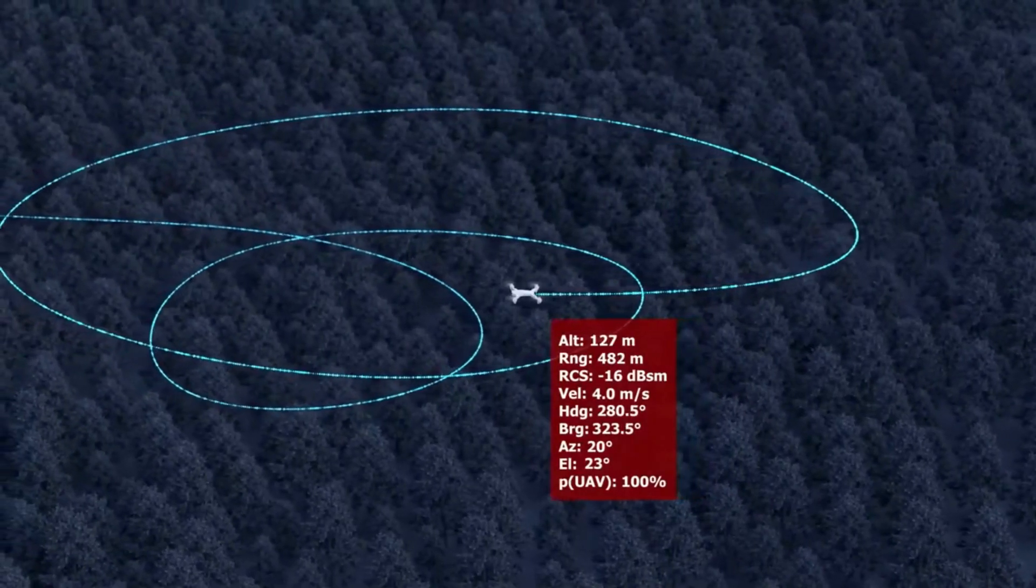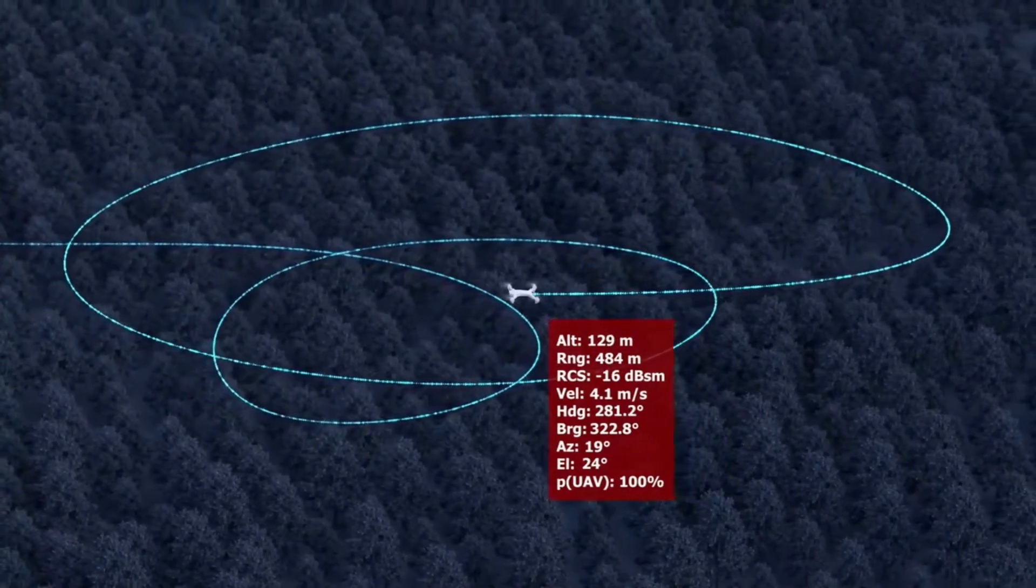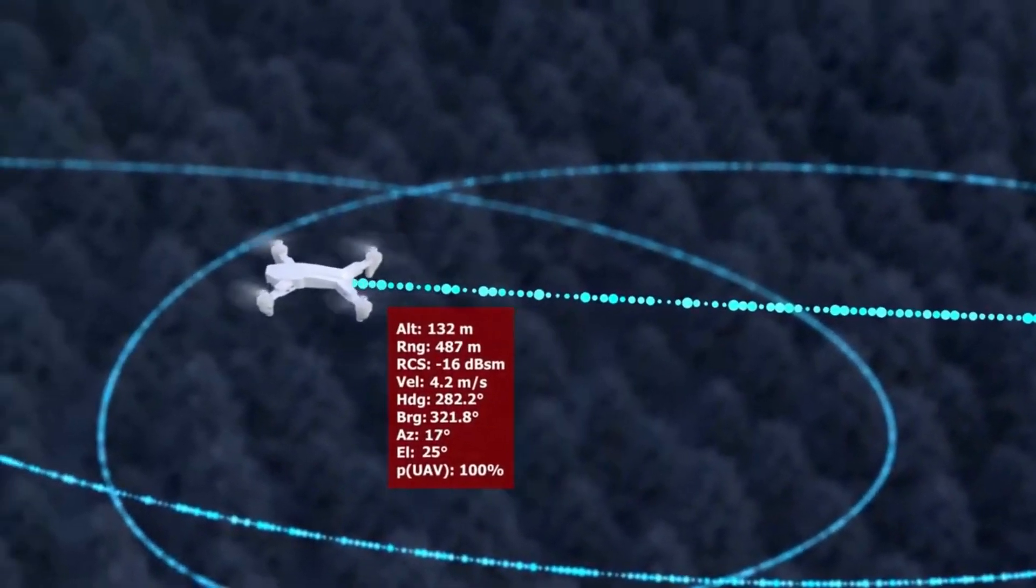Each data-rich object track defines position, size, object classification, velocity, and direction vectors.